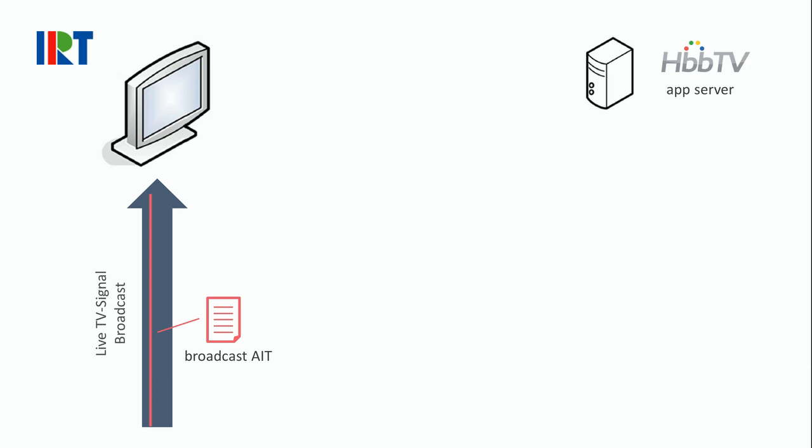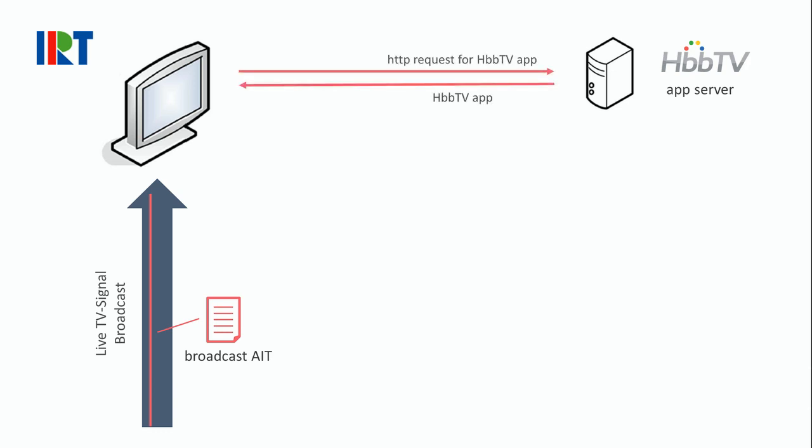This AIT contains metadata about the HbbTV applications, and the most important of these metadata is the URL of the HbbTV application. When receiving such an AIT, the HbbTV receiver can use the URL to make an HTTP request to a web server hosting the HbbTV application, and thus load and launch the HbbTV application.